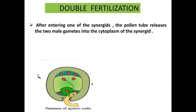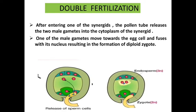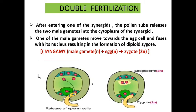One of the male gametes moves towards the egg cell. The arrow shows how one male gamete moves towards the egg cell and fuses with its nucleus, resulting in the formation of a diploid zygote. After one of the male gametes fuses with the egg cell, a diploid zygote is formed. The zygote is diploid in number.